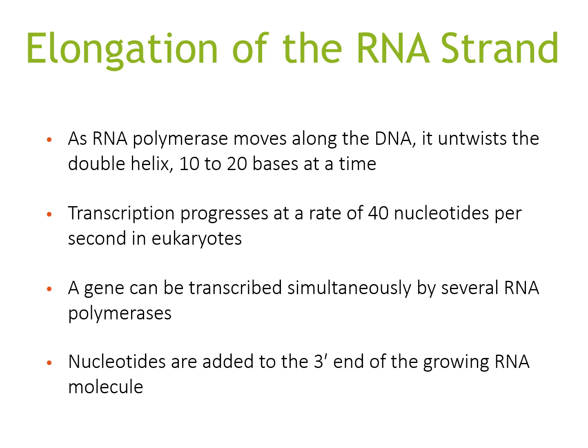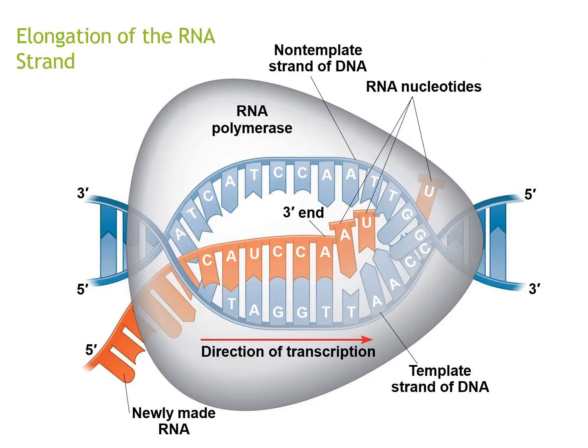Moving on to the second stage — elongation of the RNA strand. As RNA polymerase moves along the DNA, it untwists the double helix 10 to 20 bases at a time. Transcription progresses at a rate of 40 nucleotides per second in eukaryotes. A gene can be transcribed simultaneously by several RNA polymerases, and nucleotides are added to the free end of the growing RNA molecule.